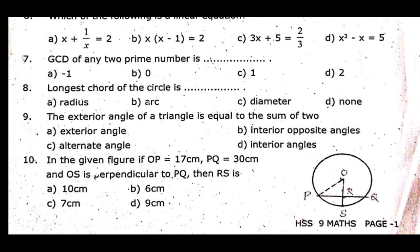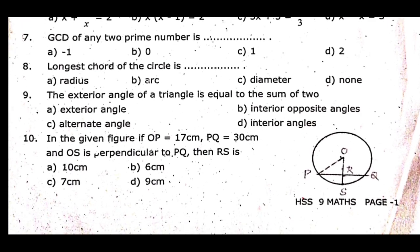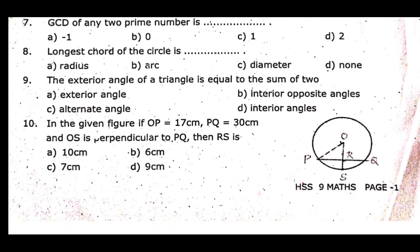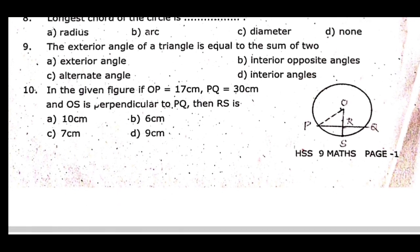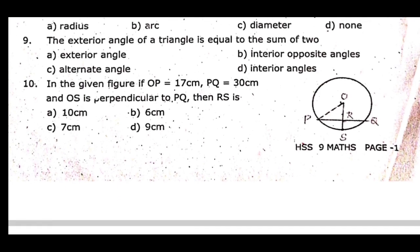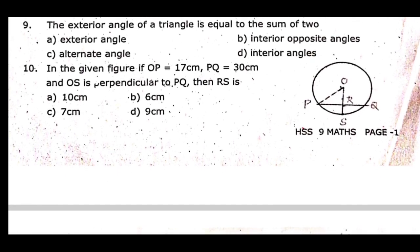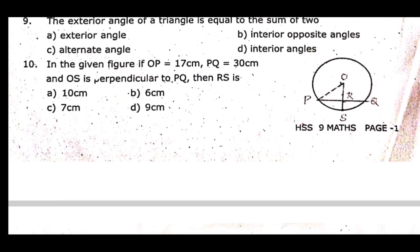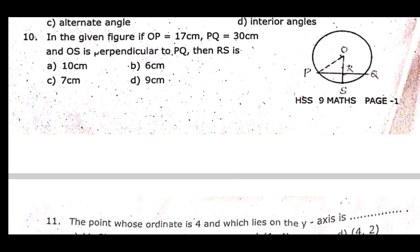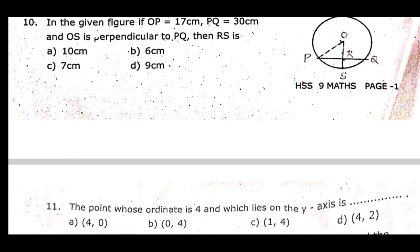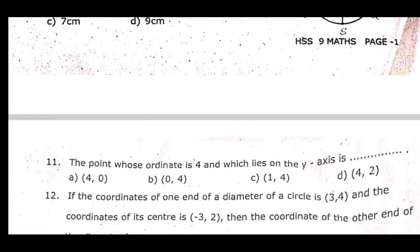Eighth one: The longest chord of the circle is dash. Ninth one: The exterior angle of a triangle is equal to the sum of 2 dash. Tenth one: In the given figure, if OP equal to 17 cm, PQ equal to 30 cm, and OS is perpendicular to PQ, then RS is equal to dash.